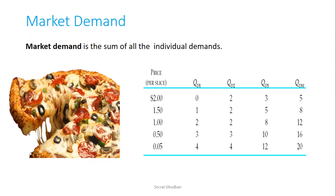Here we have an example about pizza. At a price of $2 per slice, individual one will not consume, so it's zero. Individual two will consume two slices, and individual three will demand three slices. This means at a price of $2, the quantity demanded for pizza in this market will be 5 slices. Also, at a price of $1, we're having a total market quantity demanded of 12 slices. You can notice that whenever the price decreases, the quantity demanded increases.